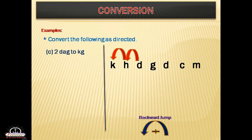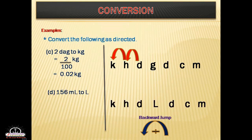Next example: 2 decagrams to kilograms. Decagram to kilogram is lower unit to higher unit — a backward jump. So you divide: 2 divided by 100, because it is two places back. The answer is 0.02 kilograms.